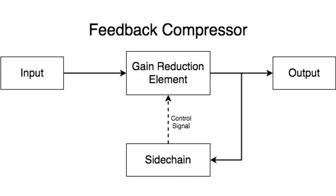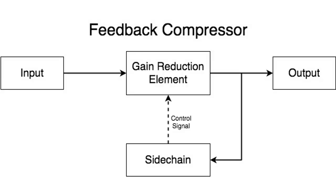The signal taken before the side chain will be inherently different — even if ever so slightly — from the one taken after the side chain circuit. In the feedback design, it is the already compressed signal that causes the compression in the first place. As the program audio signal surpasses the threshold, it passes through the gain reduction circuit and the side chain in that order. The side chain then tells the gain reduction circuit to attenuate the signal, which is fed back into the side chain and output — so the side chain is constantly adjusting the compression it itself is experiencing.